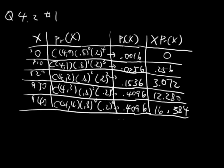Anyway, so now for the expected value of x, I will simply add these up. Actually, let me just use my calculator to add all that up. 0.256 plus 3.072 plus 12.28 plus 16.384. So the expected value is 31.992.